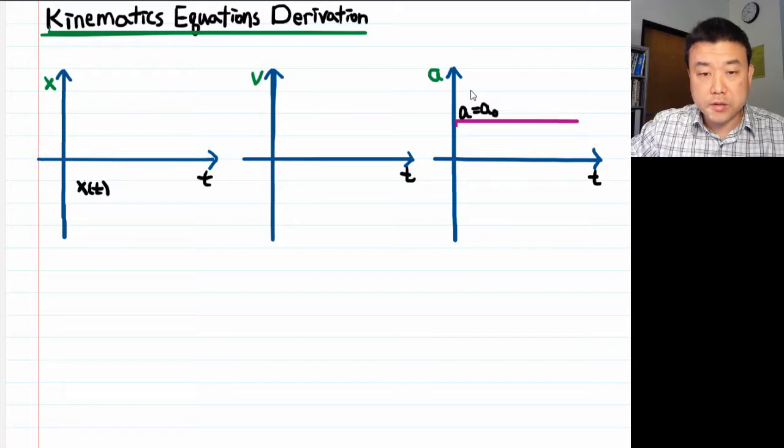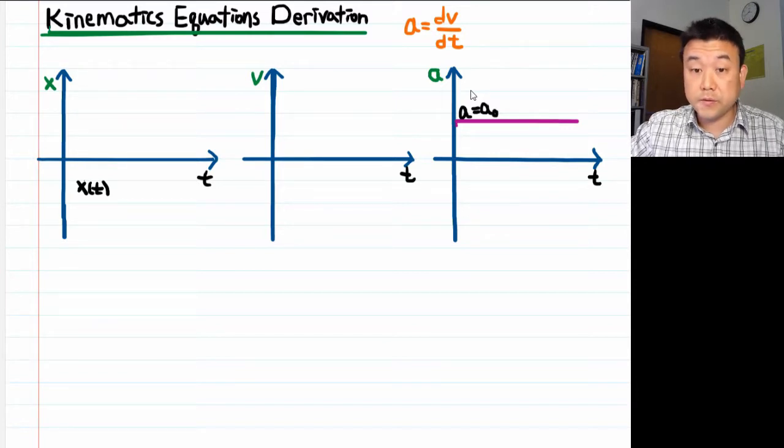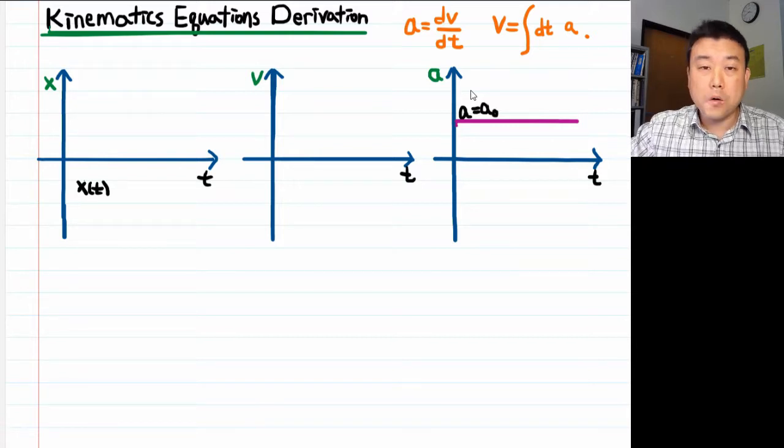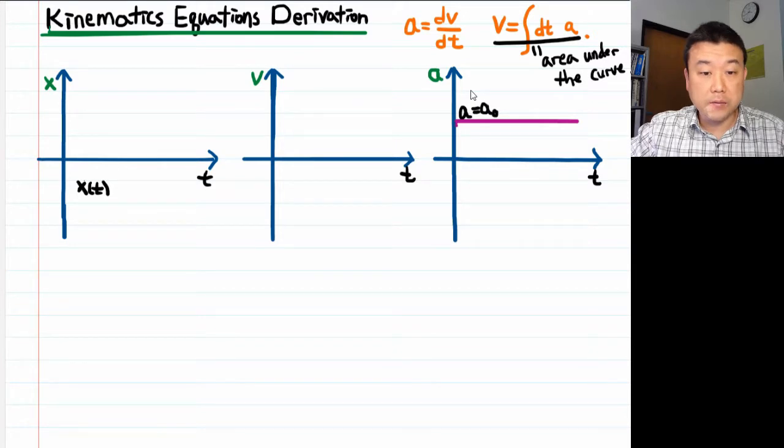So from your calculus class, you know that if your acceleration is related to the velocity through the derivative, then the reverse relationship is the antiderivative. That is, the velocity is the time integral of acceleration. But what does this mean? What the integral means is in one simple phrase, area under the curve. So if we are looking at velocity at these three different times, T1, T2, and T, then to find the velocity, we look at the area under the curve up to the time T1.